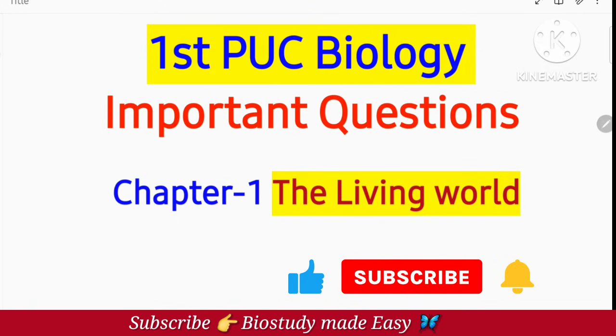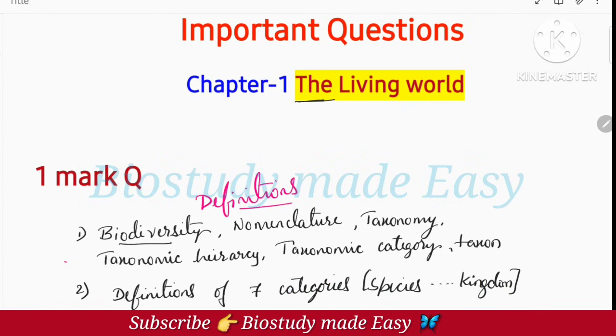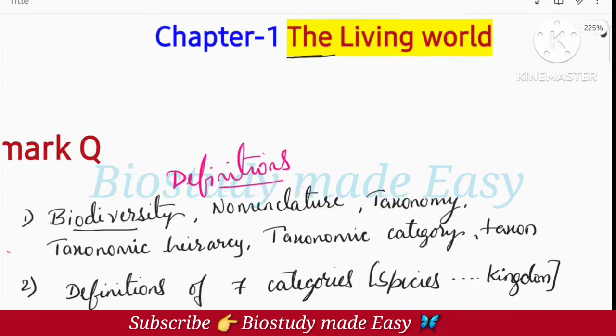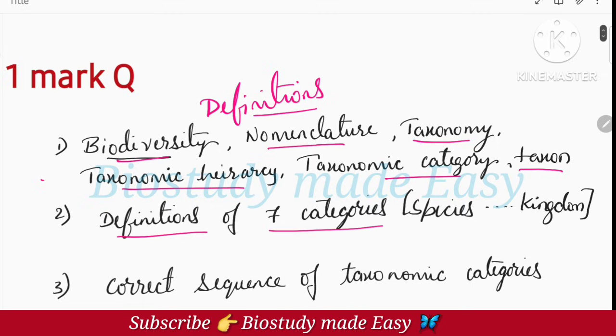So let's begin. First chapter now, the living world chapter. For each chapter, in the one mark question, the question paper pattern changed to MCQ fill in the blanks. So what shall we know at the beginning - every one mark question you should focus on. The definitions of all the seven taxonomic categories: species, genus, family, order, class, phylum, kingdom. These categories' definitions, especially species definition.